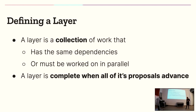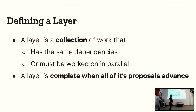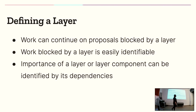When we define a layer: a layer is a collection of work with the same dependencies, or where proposals on that layer must be worked on in parallel. A layer is completed when all its proposals advance. Notably, no work is ever blocked by a layer. If you want to work on a layer 3 proposal but layer 0 hasn't finished, you can continue — but we understand there are pieces that need to move into the specification before a layer 3 proposal specification is complete.